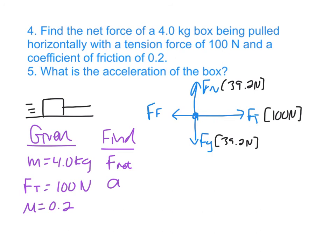We can't find the net force until we know frictional force, but given the coefficient of friction, and now that we have the normal force, we can get friction. So FF equals mu FN. So this is 0.2 times 39.2 newtons. So my frictional force is equal to 7.84 newtons.